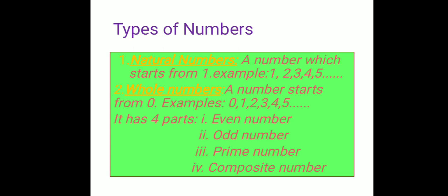First in the types of numbers comes natural number — a number which starts from one. Example: one, two, three, four and so on. Next comes whole number — a number that starts from zero. Example: zero, one, two, three, four, five and so on.